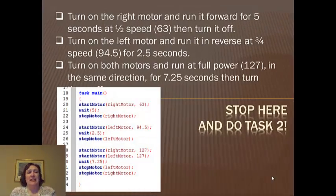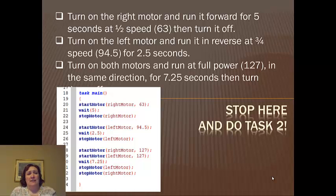So let's try that. Turn on the right motor, run it forward for five seconds at half speed, 63. Then turn it off. Then turn on the left motor and run it in reverse at three-quarter speed, which is 94 and a half, or 94 you can round, for two and a half seconds.